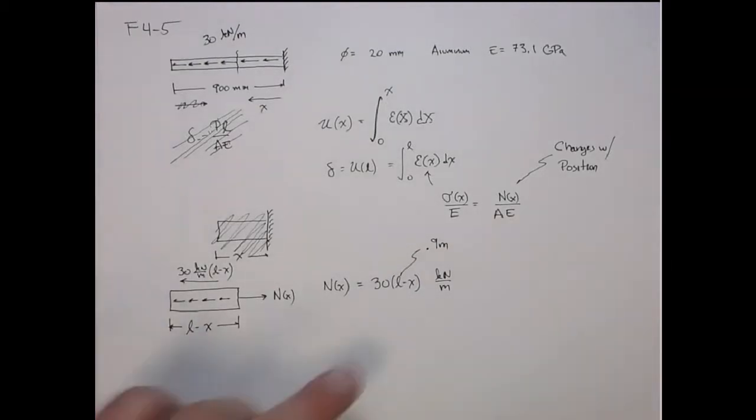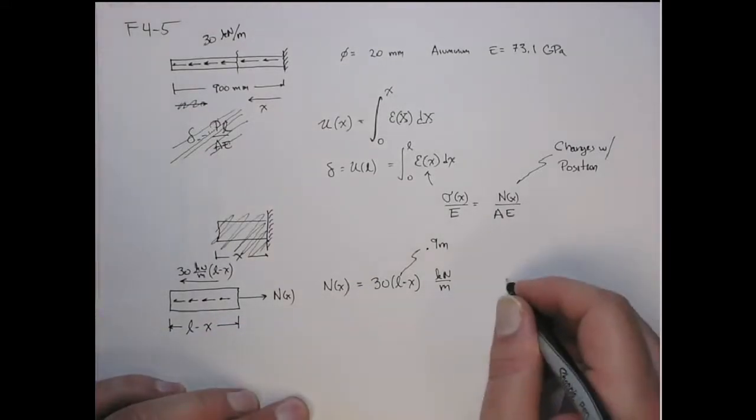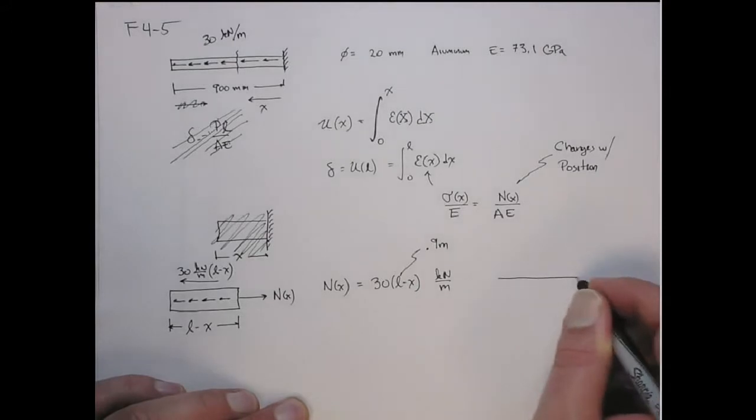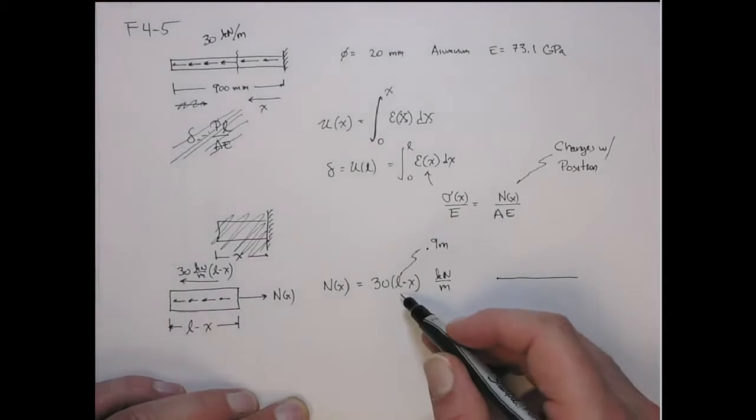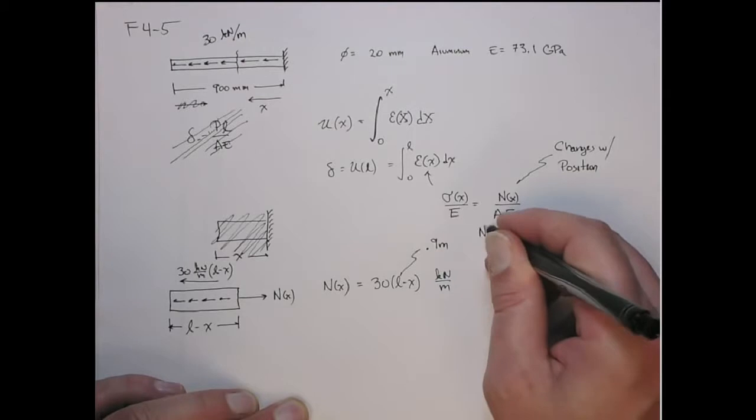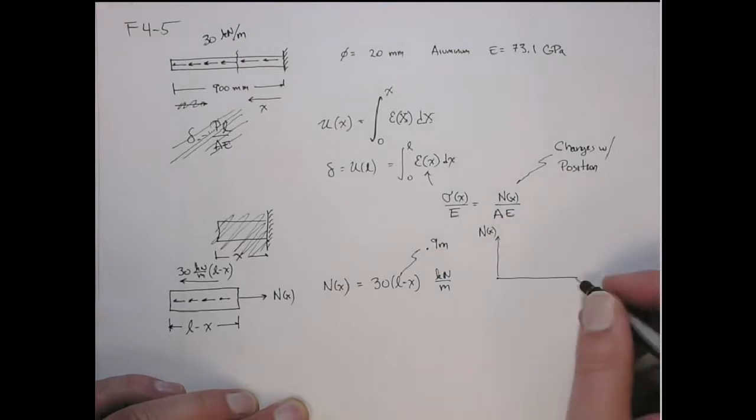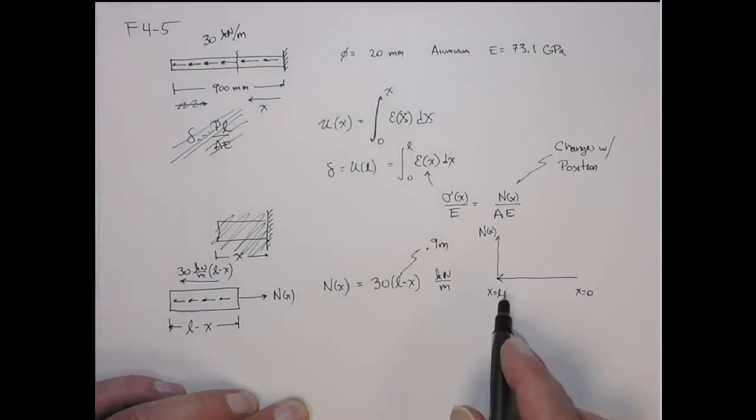So that is the internal axial reaction force. If you were to plot it, you can see here at the very tip, at point A, it goes to zero. So if we were to plot N of x versus x - this is x equal to zero and this is x equal to L, as drawn on the beam.